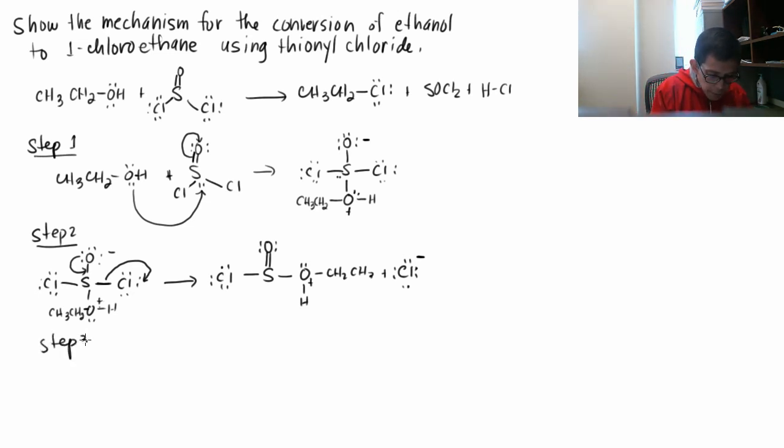Step three, so we start with a product in step two. S double bond O, Cl, OH CH2CH3, positive charge, plus Cl minus. So oxygen is not happy being positively charged, so this is what happens.